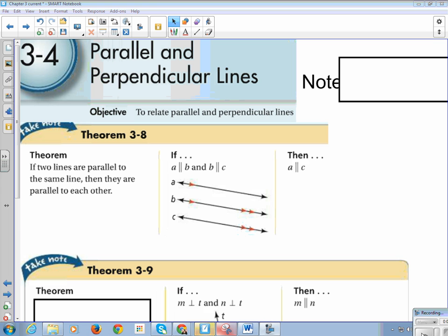For example, if A is parallel to B and B is parallel to C, kind of like the transitive property, then we can say A is parallel to C.